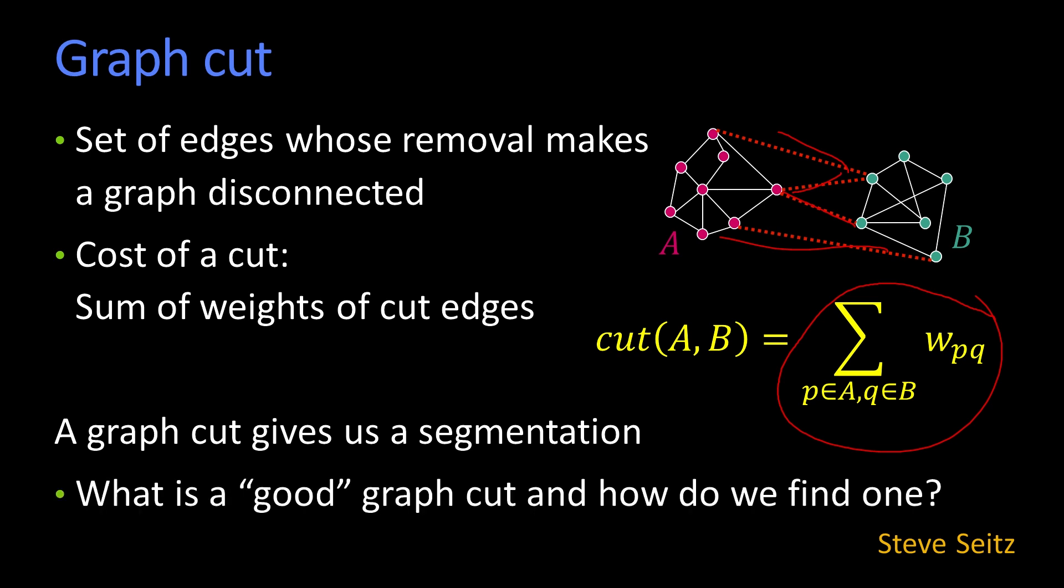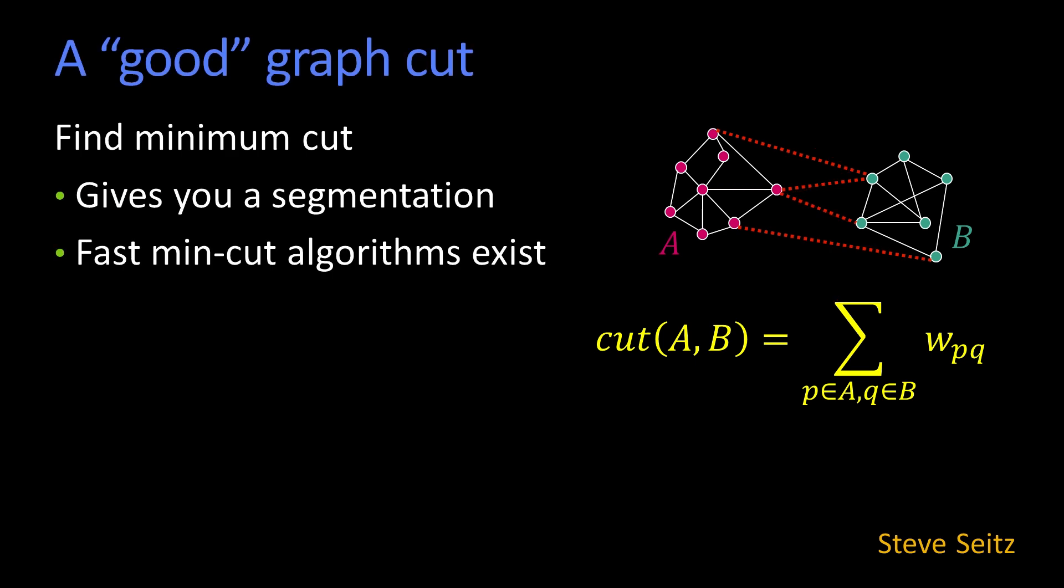So the question becomes, what is a good graph cut and how do you find one? There are algorithms called min-cut algorithms, sometimes called max flow because they're duals of each other, that allow you to find that segmentation in a relatively not too complex a manner. Fast min-cut algorithms exist.